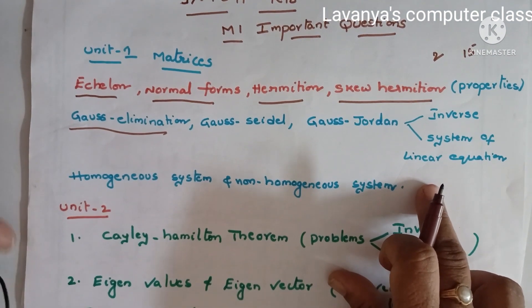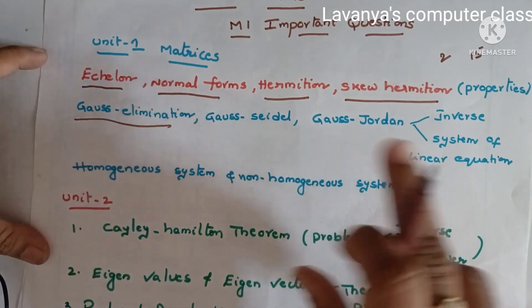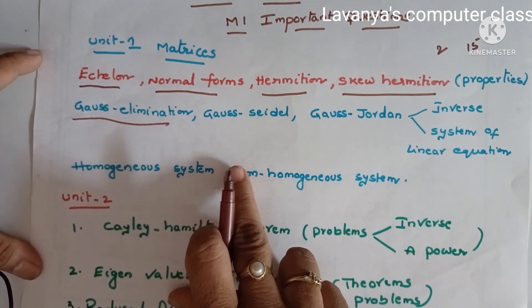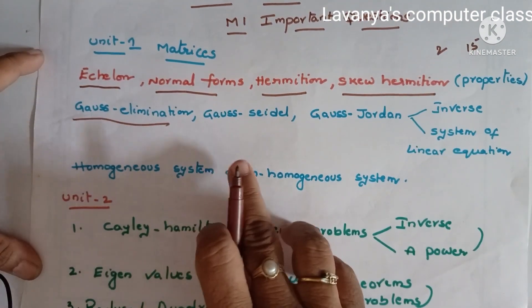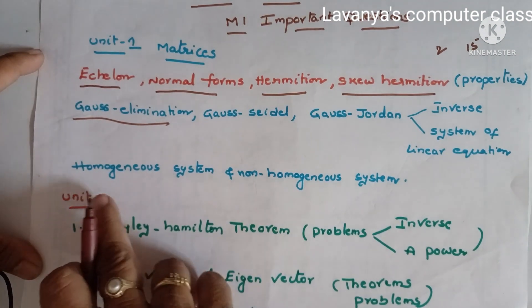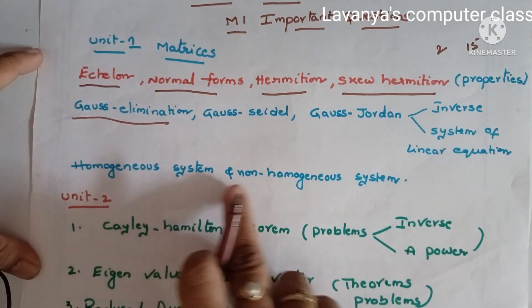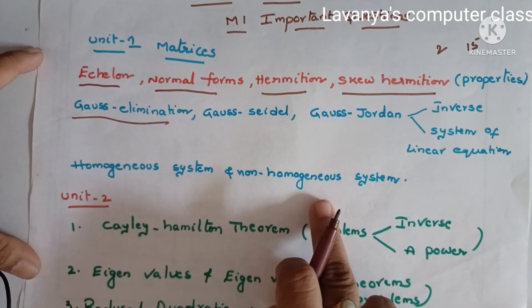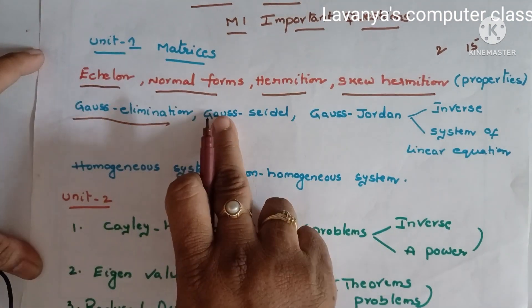If it is corona pattern, you are getting two questions from these units also. That's why most concentrate on unit one and unit two. In unit one, homogeneous system and non-homogeneous system questions are also coming.